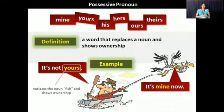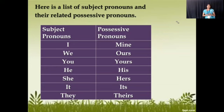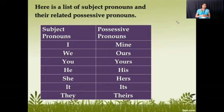So mine, yours, his, hers — these are examples of possessive pronouns. Now let us understand the chart of subject pronouns and possessive pronouns. Subject pronoun 'I' → possessive pronoun 'mine'; 'we' → 'ours'; 'you' → 'yours'; 'he' → 'his'; 'she' → 'hers'; 'it' → 'its'; 'they' → 'theirs'. These are the possessive pronouns which we use in speaking as well as in writing.